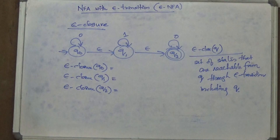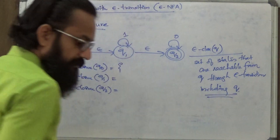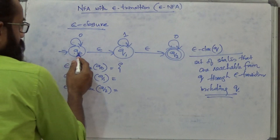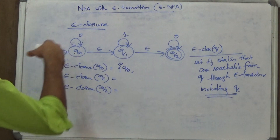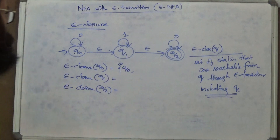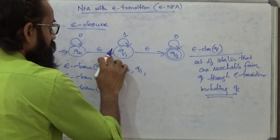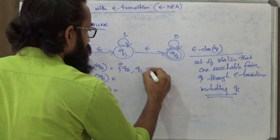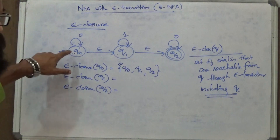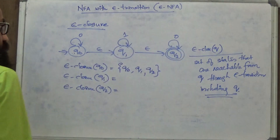Let us consider Q0. Epsilon closure of Q0 contains Q0 itself, since epsilon closure of any state includes that state. It also includes the set of states reachable from Q0 through epsilon transitions. From Q0 through an epsilon transition it can go to Q1, and through the chain of epsilon transitions it will also go to Q2. So without consuming anything from Q0 it can reach Q1 and Q2. For that reason, Q1 and Q2 belong to the epsilon closure of Q0.